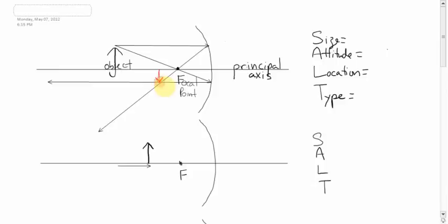So what do we know about the image? In terms of size, there's the object, there's the image — it's obviously smaller. The attitude, meaning right-side-up or upside-down, it's upside-down — USD. The location: is it in front of the mirror or behind the mirror? And it is in front of the mirror.